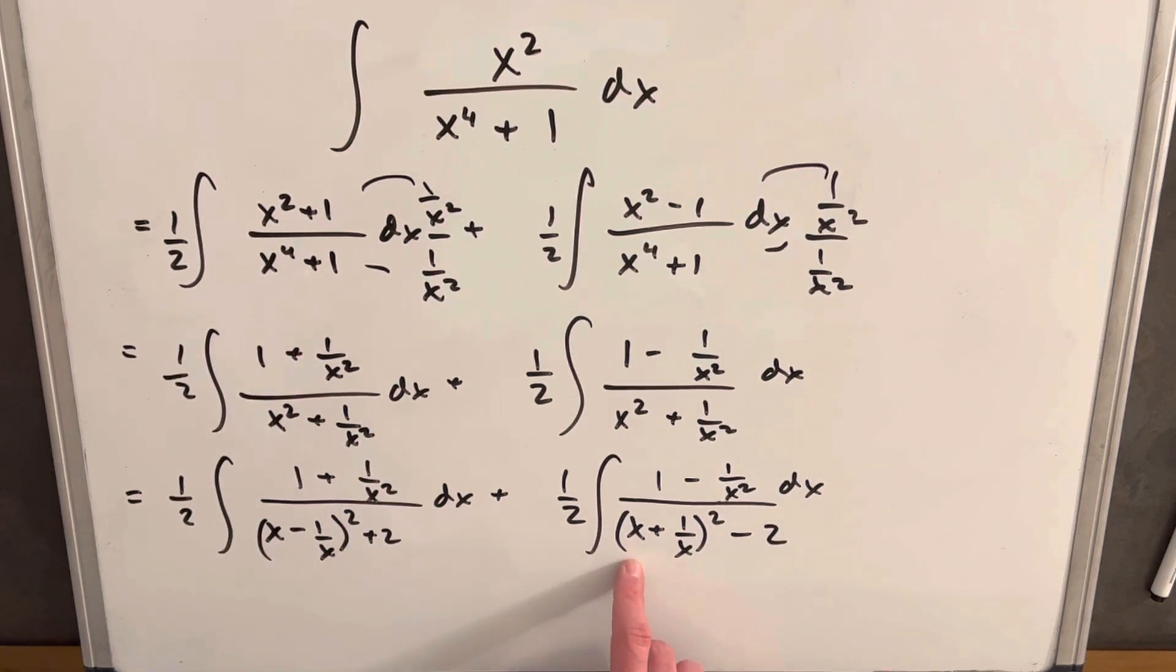And here, we square this, and we get x squared plus 1 over x squared plus a 2. We subtract it off, so we haven't changed that.